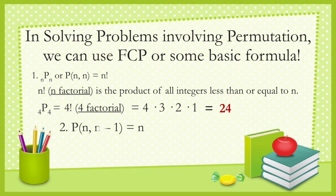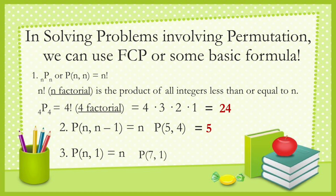Another formula is P(n, n−1), which is equal to n. For example, the permutation of five objects taken four at a time — since five objects is one more than four — this equals five. Also, P(n, 1) equals n. For example, seven objects taken one at a time equals seven.